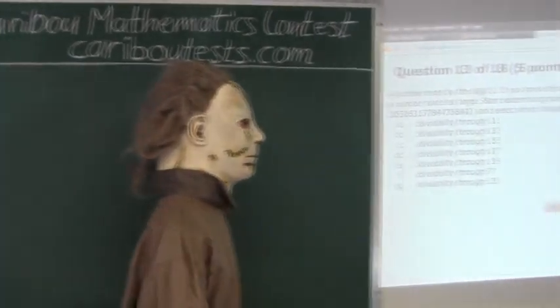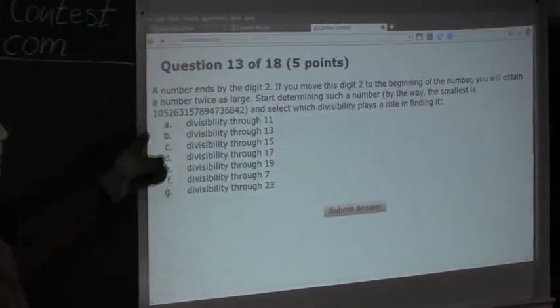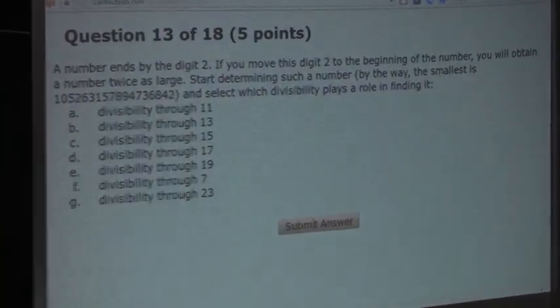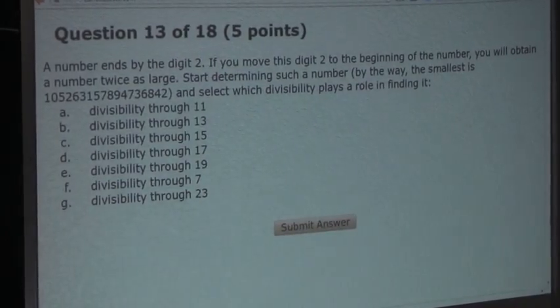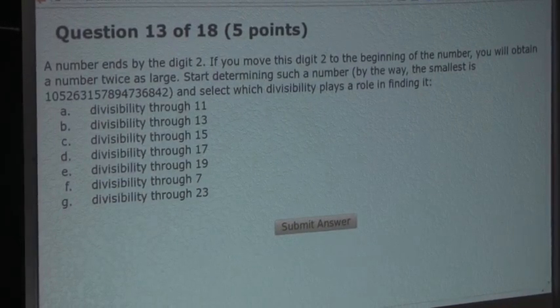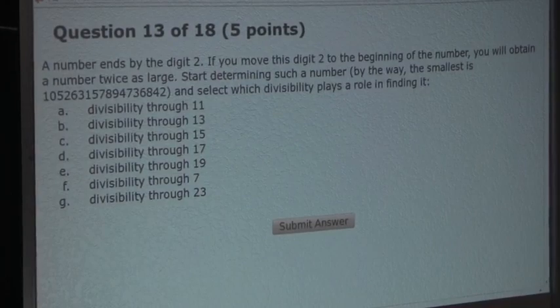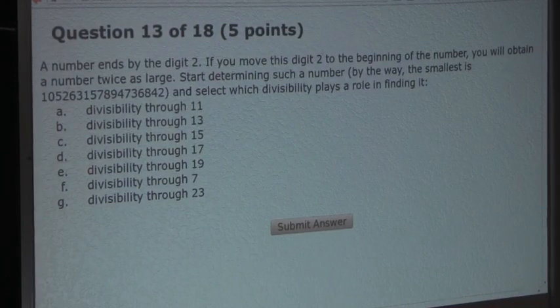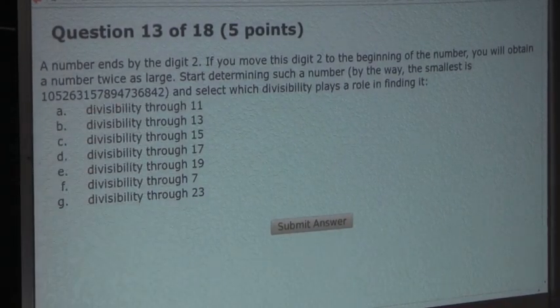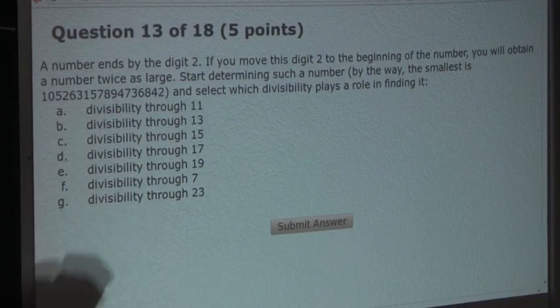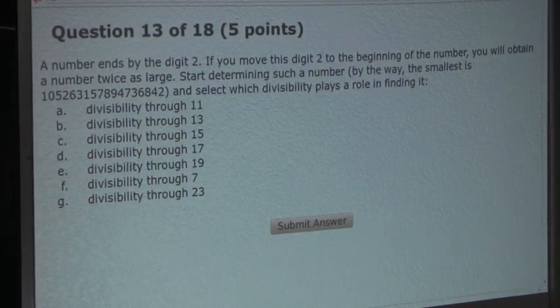The question is: a number ends by the digit 2. If you move this digit 2 to the beginning of the number, you will obtain a number twice as large. Start determining such a number - by the way, the smallest in this sequence - and select which divisibility plays a role in finding it.